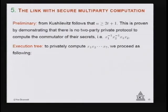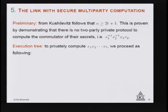t parties cannot learn anything about the actual inputs. There is a preliminary result following from work by Kuzilevitz: n must be greater than or equal to 2t+1. If the group is abelian, that's not the case — t+1 is sufficient. So the non-abelian aspect immediately forces n to be larger: given t corrupted parties, you need at least 2t+1 total parties, meaning the bad guys must be a strict minority.